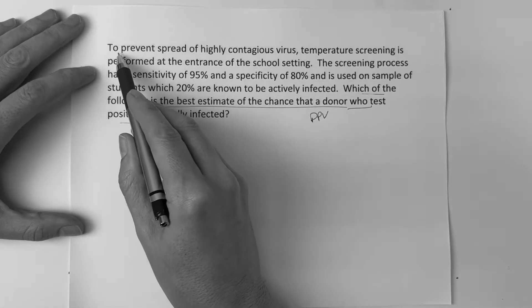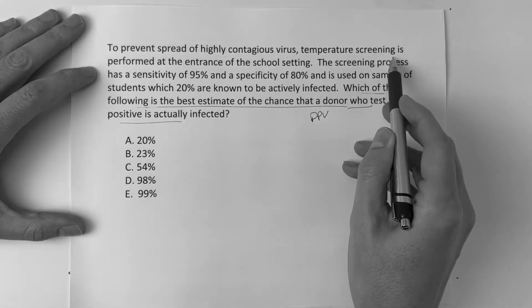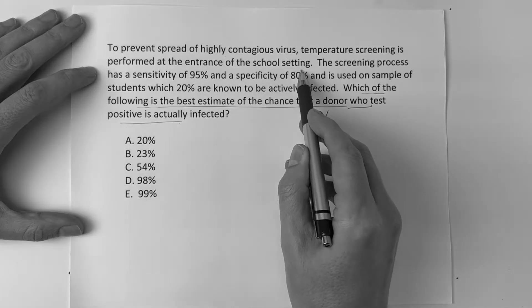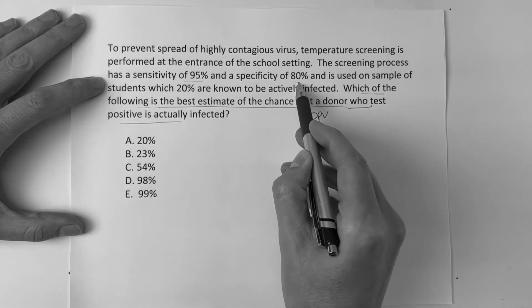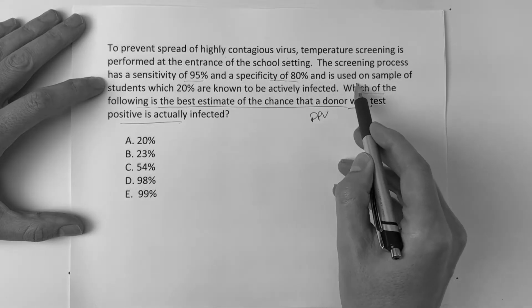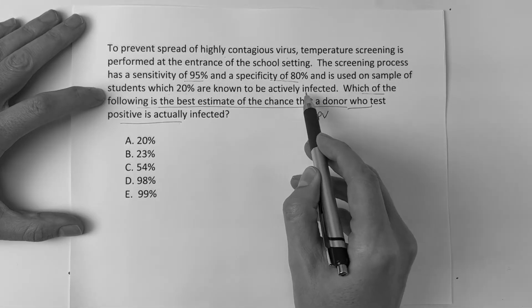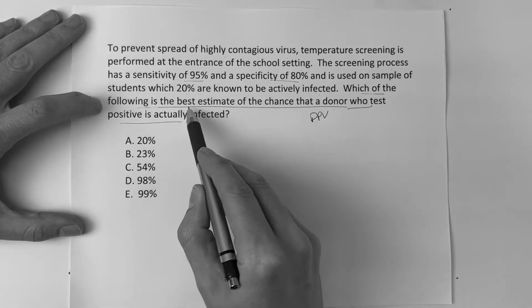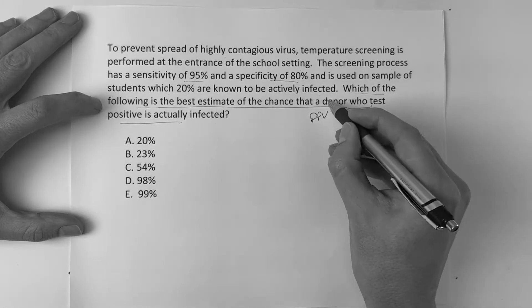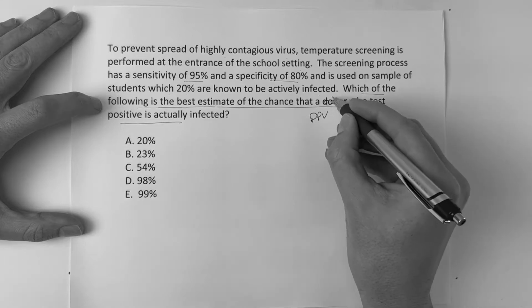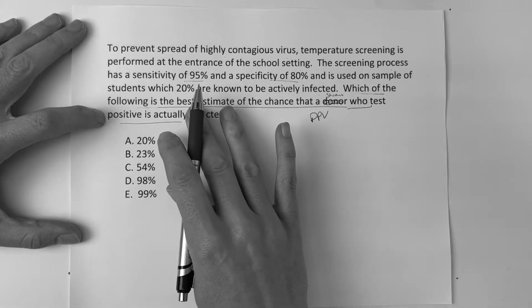Now, the question reads fully: to prevent spread of a highly contagious virus, temperature screening is performed at the entrance of the school setting. The screening process has a sensitivity of 95% and a specificity of 80% and is used on a sample of students, which 20% are known to be actively infected. Which of the following is the best estimate of the chance that a student who tests positive is actually infected?